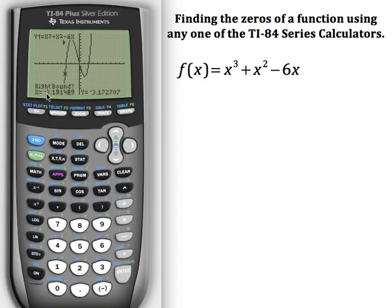Then the next question the calculator is going to ask me is to locate the right bound. So I am going to arrow to the right side of that zero, or above, and then I'm going to press enter. And then it does ask for a guess. Now in theory, you can be anywhere on that line. However, I do like to move it closer to the actual zero for my guess, and then hit enter.